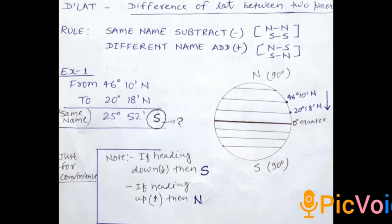So basically we are going down. In case of D-Lat, if we are heading down, then put the direction South. This is the rule. And if we are heading towards North, heading upward, then put the direction North.